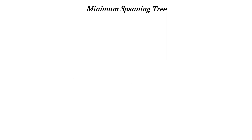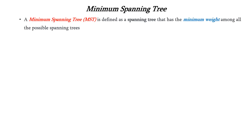First let us see the definition of minimum spanning tree. It is defined as the spanning tree that has the minimum weight among all the possible spanning trees. Basically we construct a spanning tree from a graph. For one graph we can have many possible spanning trees, so among all the possible spanning trees the one with the minimum weight is considered as the minimum spanning tree. In short we call it MST.